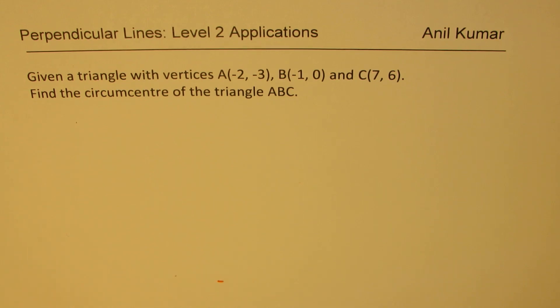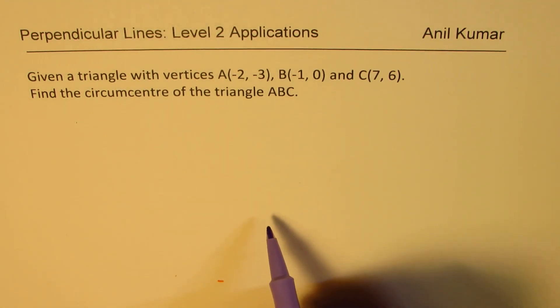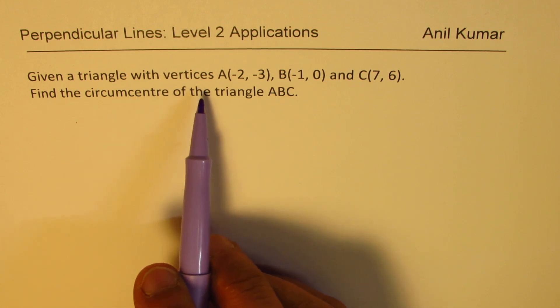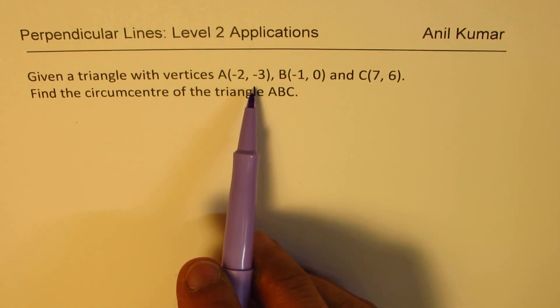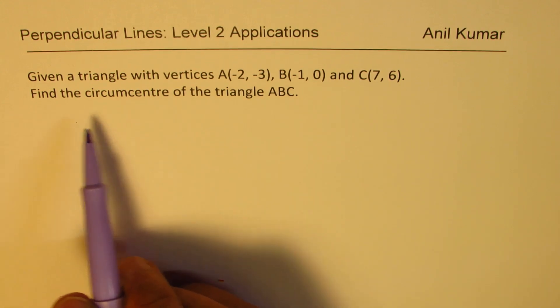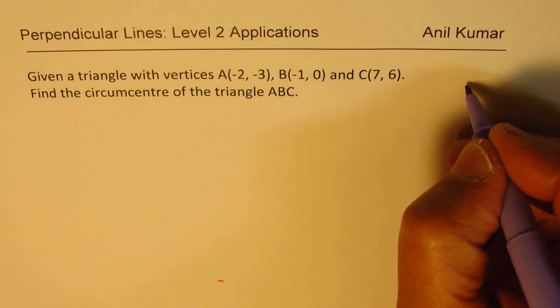One of them is to find the circumcenter, which we are going to understand in this particular video. The question here is, given a triangle with vertices A(-2, -3), B(-1, 0), and C(7, 6), find the circumcenter of the triangle ABC.